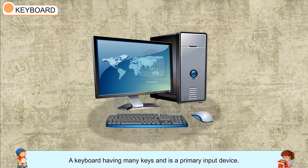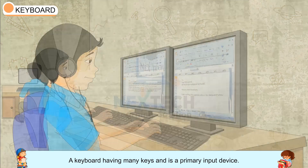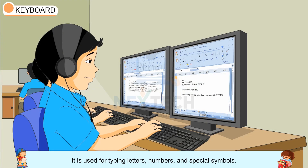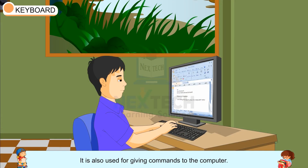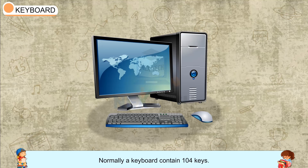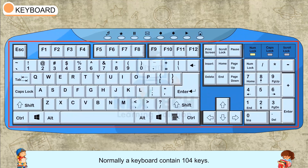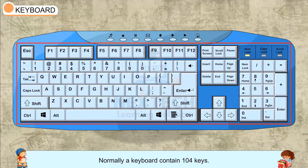Keyboard: A keyboard has many keys and is a primary input device. It is used for typing letters, numbers, and special symbols. It is also used for giving commands to the computer. Normally, a keyboard contains 104 keys.